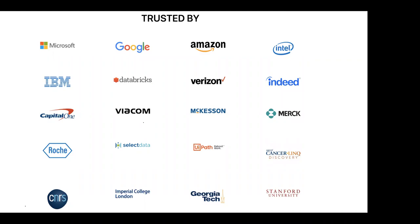In terms of who is using the library — we don't know everyone because it's completely open source — but from teams and companies who have contacted us and said they use this in production, you can see it's really all the major tech companies, many companies in finance, insurance, retail, media, and a lot of work in healthcare. John Snow Labs is a company that focuses on healthcare and life science, so that's our vertical.